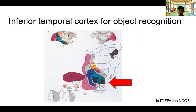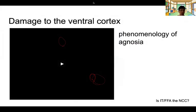In humans, this corresponds to V8, which includes part of the posterior IT. This corresponds to V8, likely the color areas for humans. So let's look at a case study where some subjects have received bilateral damage to these areas.